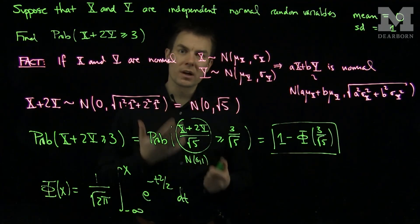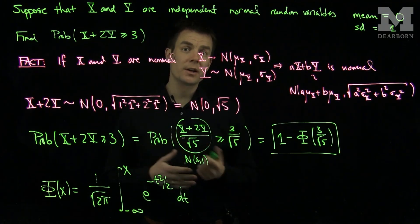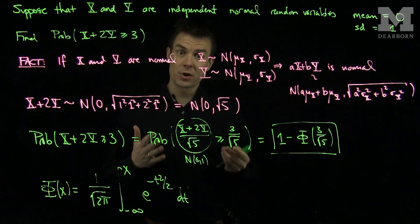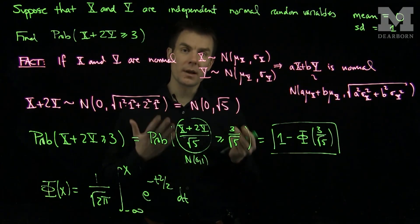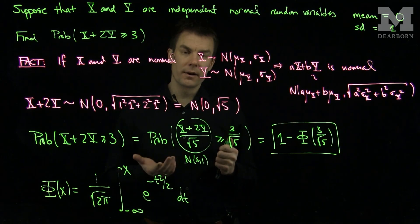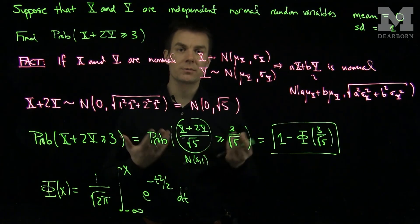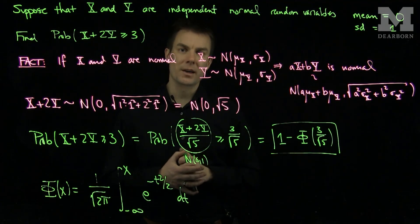So whenever we're given two random variables that are independent and normally distributed, if you take a linear combination of them, the means is the ordinary linear combination. Then the variance, or the standard deviation, is found by a linear combination in terms of squaring them. Thank you very much.